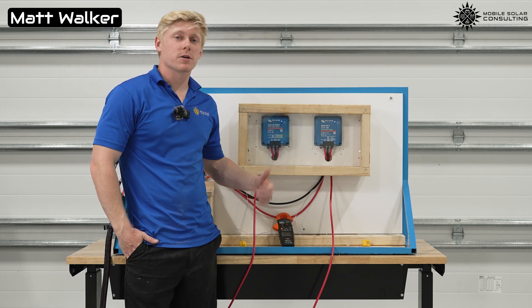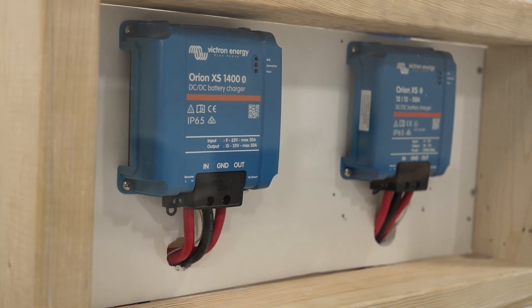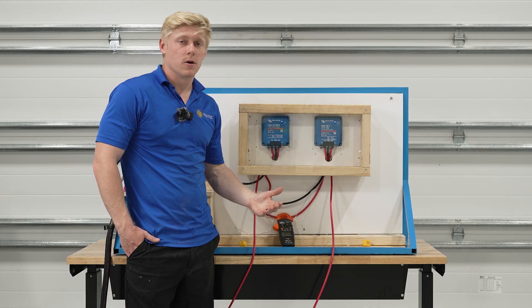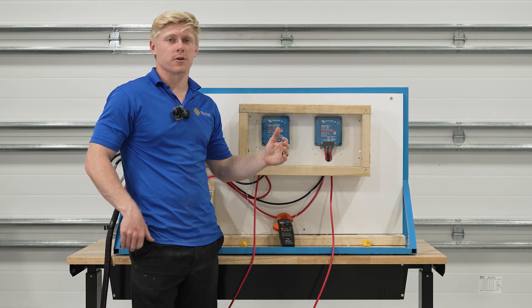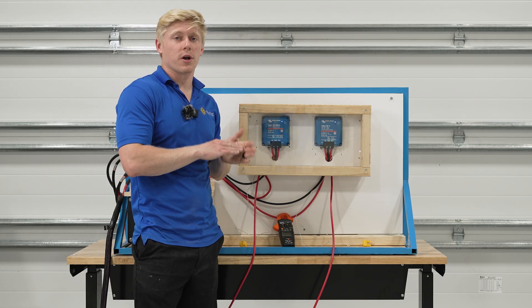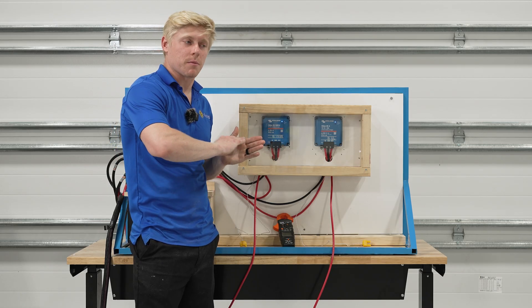Matt here with Mobile Solar. Today we're testing these Orions, the XS and the 1400, to see how hot they'll get. We also want to see at what temperature they will begin to reduce their output to avoid overheating and what kind of temperature they plateau at.